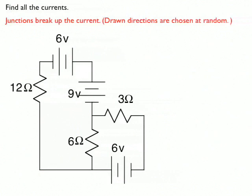In this simple example, I've got more than one battery and I've got a couple different loops to work with. The goal is to find all the currents. The first thing to identify is the fact that I have several junctions here, and the junctions are going to break up my current. So I'm not going to have one current for the whole circuit, but I'll have several currents for the whole circuit.